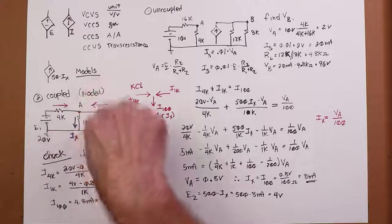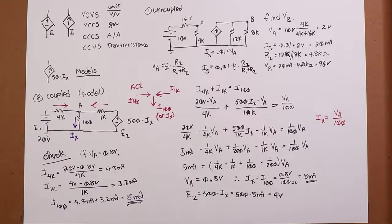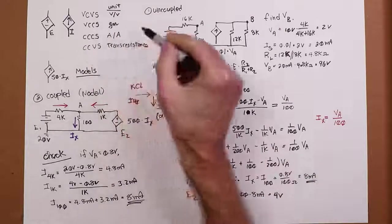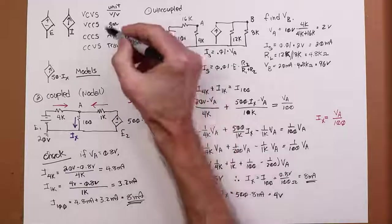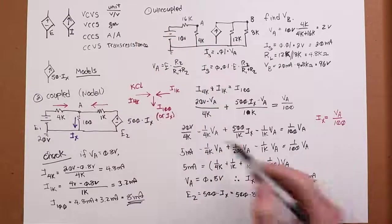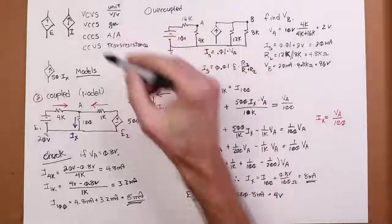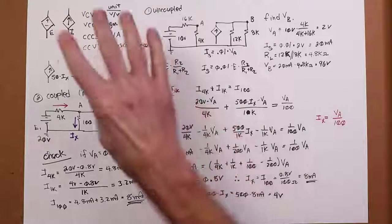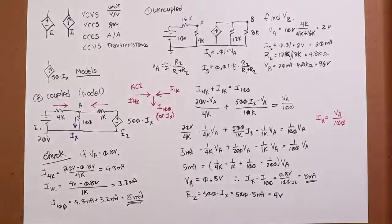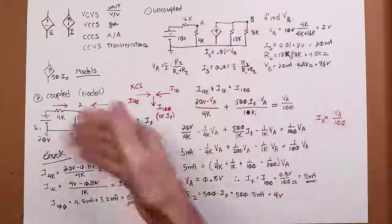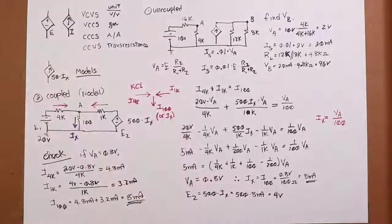All right. So we very often use, as I said, these controlled sources as parts of models. You know, we would model, for example, a bipolar junction transistor as a current-controlled current source. We would model a field-effect transistor as a voltage-controlled current source. So there would be parameters that we would be interested in. There would be a GM, a transconductance for the FET. There would be a beta, a current gain, if you will, for the bipolar junction transistor. So we're going to see these again, particularly in your semiconductor and devices work. But there you go. Okay. Uncoupled, coupled versions of our dependent sources. Beauty.